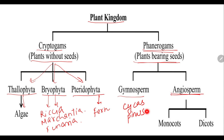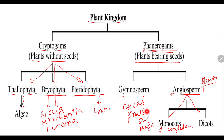Next, we will study about angiosperms. These are the flowering plants — plants which always produce flowers. Further, angiosperms are classified into monocots and dicots. Monocots are those which have only one cotyledon. For example, maize, sugar cane, and banana — all these are examples of monocots.